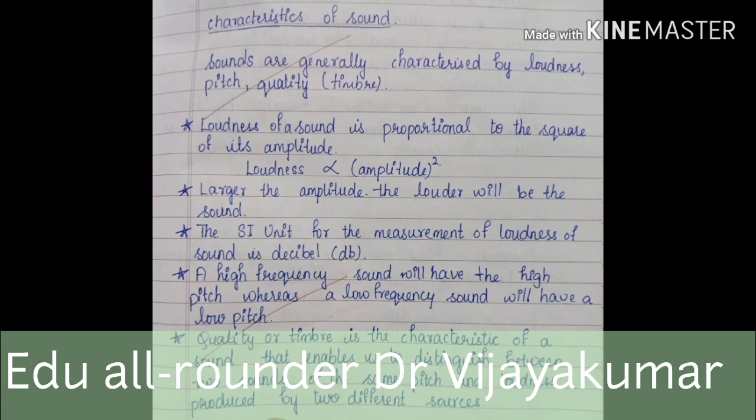Sounds are generally characterized by loudness, pitch and quality. Loudness of sound is proportional to the square of its amplitude — the larger the amplitude, the louder the sound. The SI unit for measurement of loudness is decibel. A high frequency sound will have a high pitch, whereas a low frequency sound will have a low pitch. Quality, or timbre, is the characteristic of sound that enables us to distinguish between two sounds of the same pitch and loudness produced by two different sources.